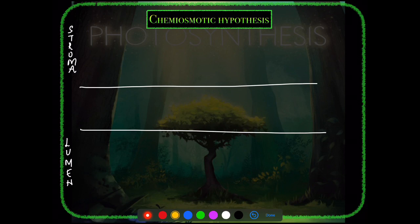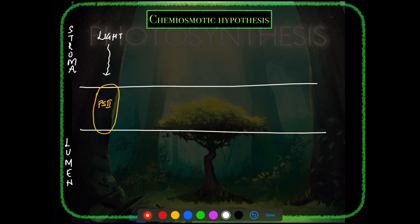Water splits on the lumen side, producing oxygen and protons; its electron goes to PS2. PS2 sends the electron to the next acceptor, Plastoquinone (as NCRT's diagram shows — skipping Pheophytin). Importantly, Plastoquinone is a hydrogen carrier, not just an electron acceptor. It pulls protons from the stroma toward itself.